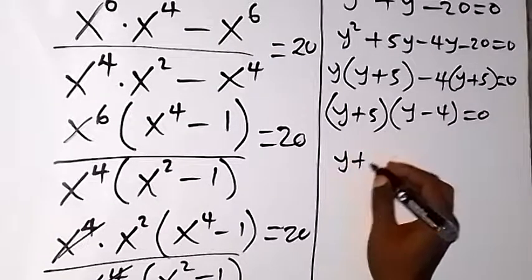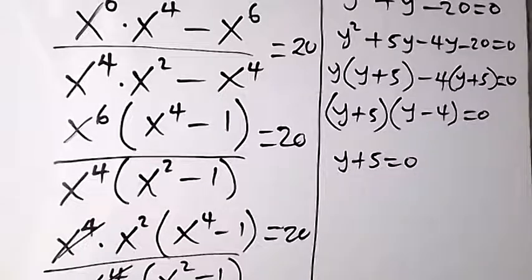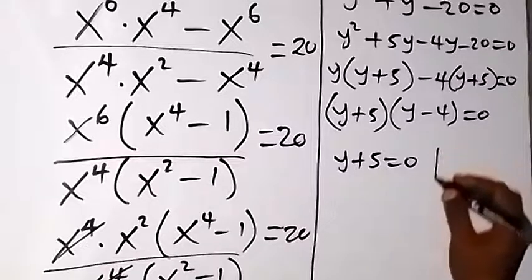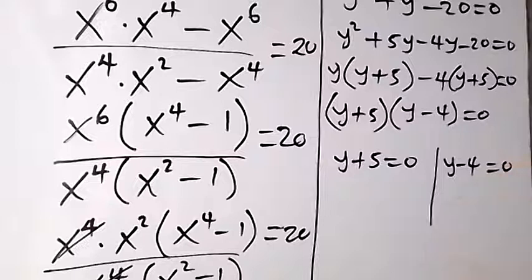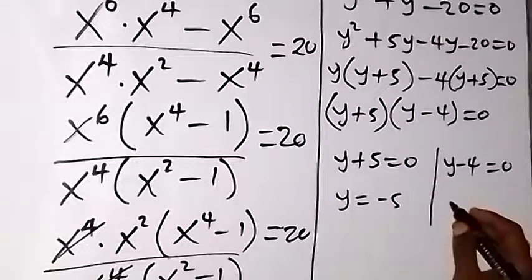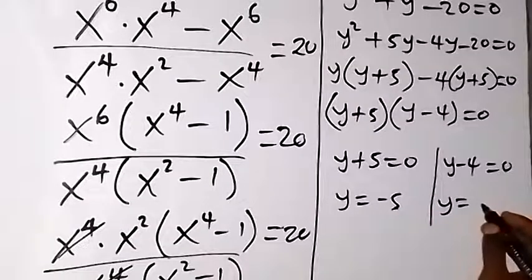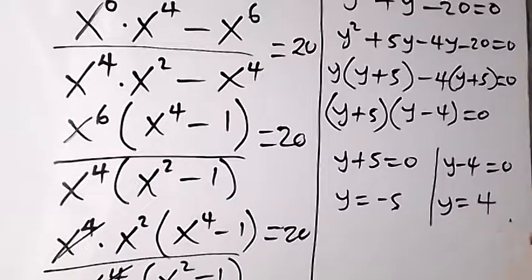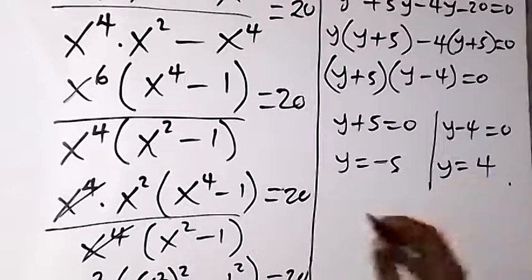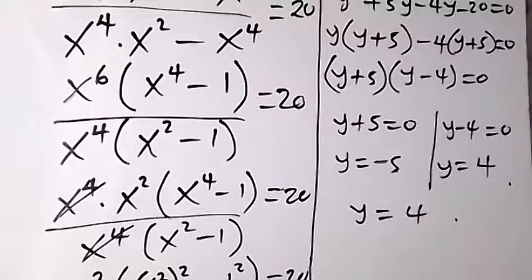We have two cases: y + 5 = 0 giving y = -5, and y - 4 = 0 giving y = 4. Since y = x^2, y = -5 gives no real solution, so we work with y = 4.